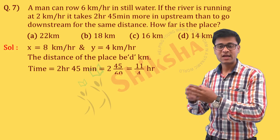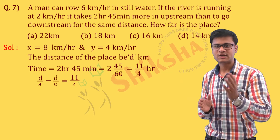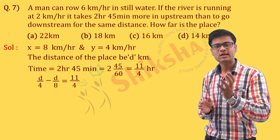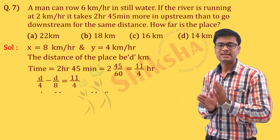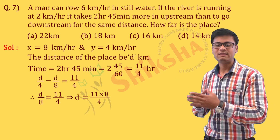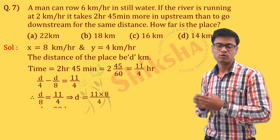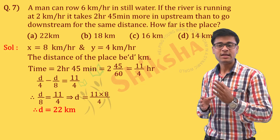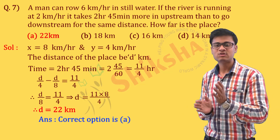The time equation is: d/4 (upstream) − d/8 (downstream) = 11/4. This gives d/8 = 11/4, therefore d = (11 × 8)/4 = 22 km. The distance is 22 km. Answer is Option A.